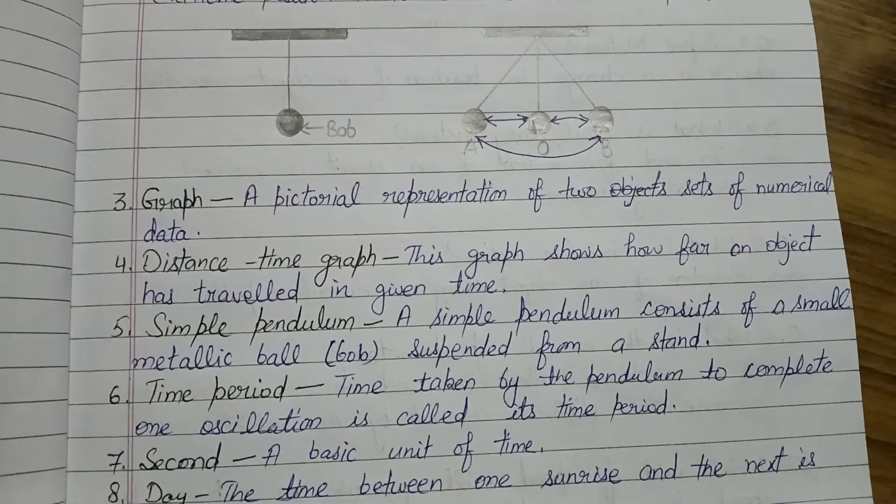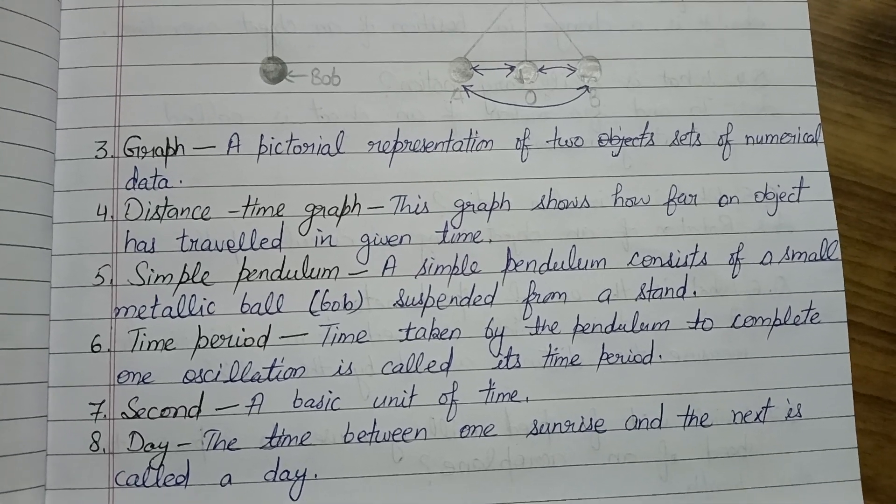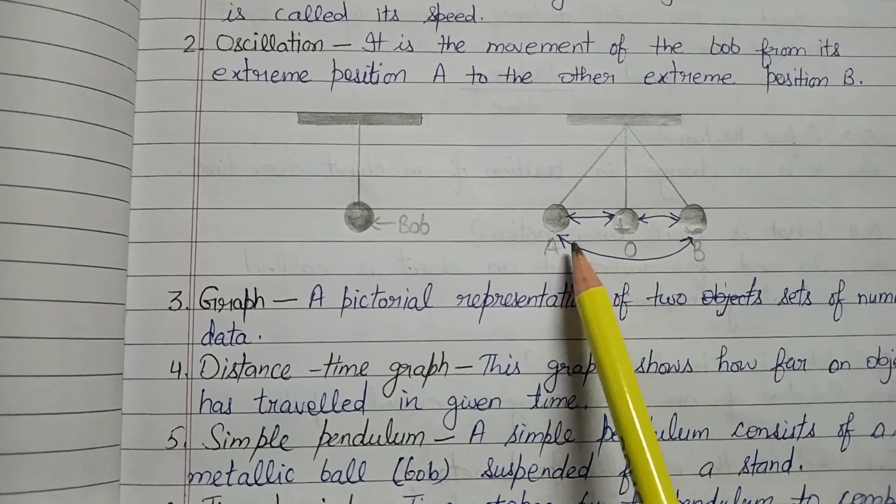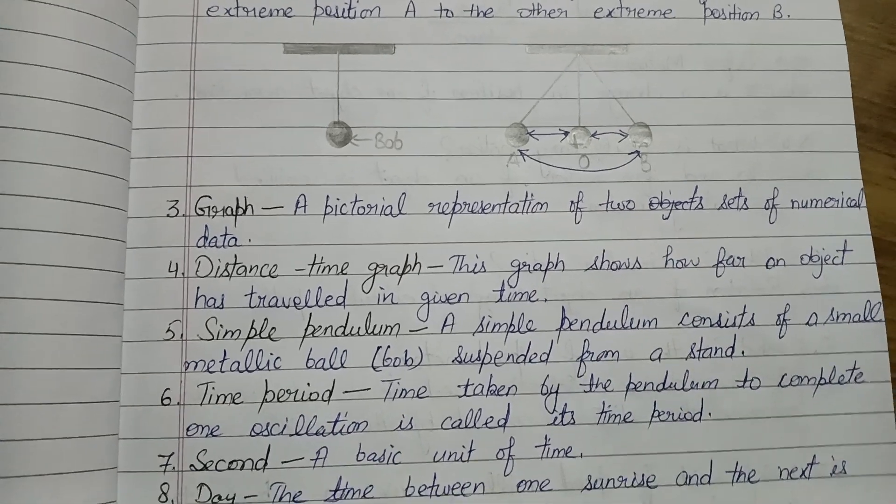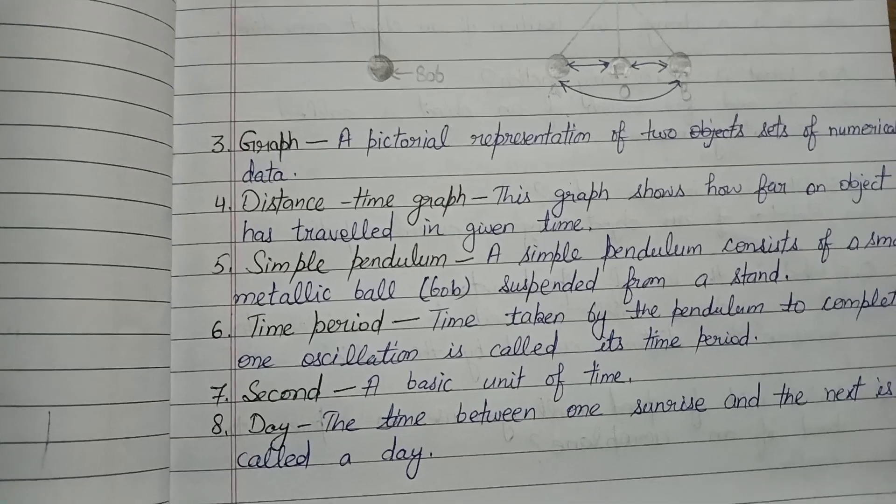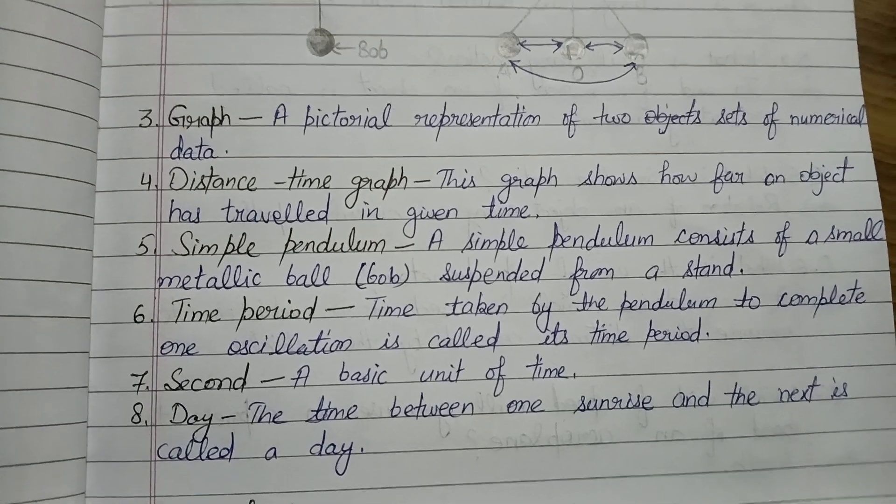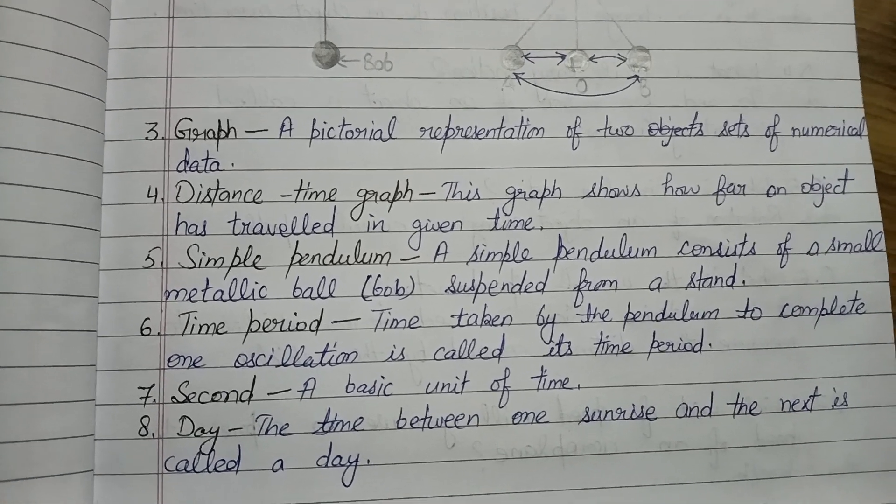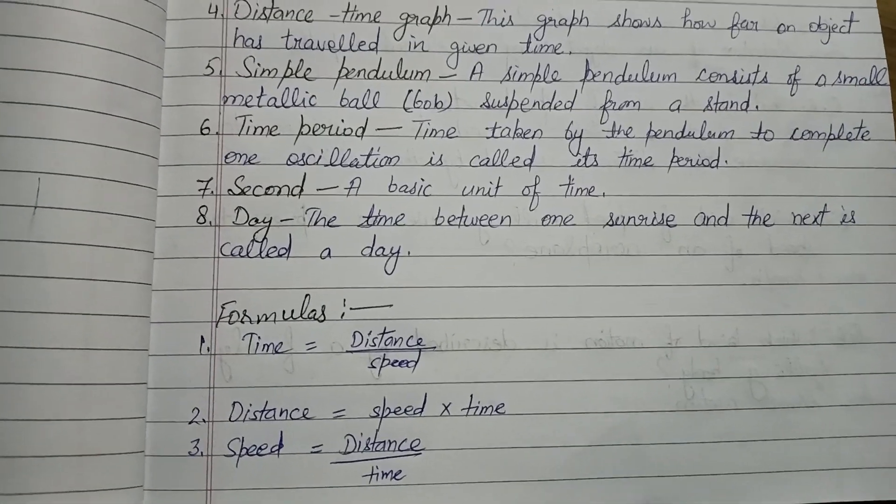Time period - time taken by pendulum to complete one oscillation. Ek oscillation complete karne ke liye, matlab ek baar bob ko ek position se B tak jaane ke liye aur wapis B se A tak aane ke liye kitna time lag raha hai, that is called time period. Second kya hai - basic unit of time. Next is day - the time between one sunrise and the next. Ek sunrise se next sunrise ka jitna jo time hota hai, that is 24 hours, usse hum kya bolte hain, complete day.